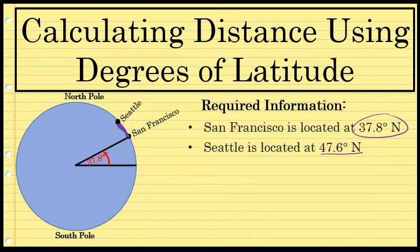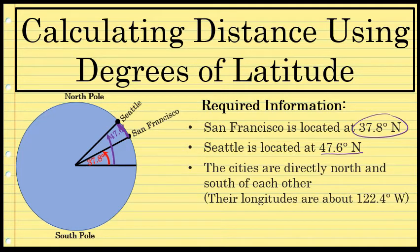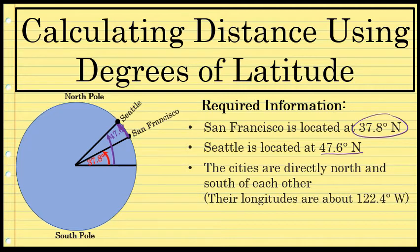The latitude of Seattle is 47.6 degrees north, meaning the angle between the equator and Seattle is 47.6 degrees. These cities are directly north and south of each other — if that were not the case, I could not use this process. The longitudes of Seattle and San Francisco are each 122.4 degrees west.